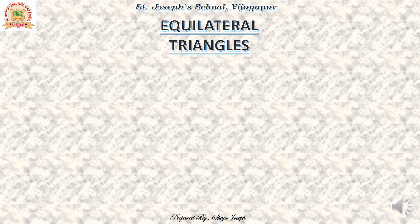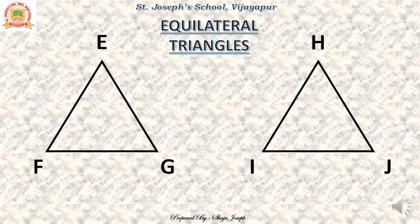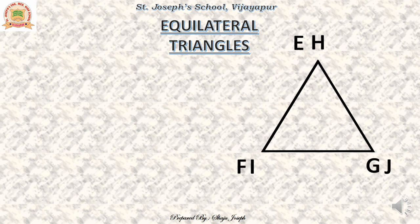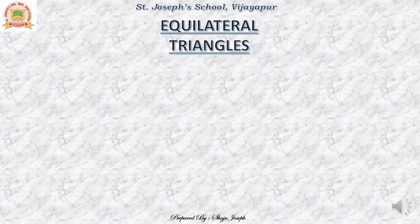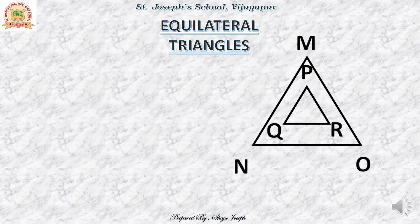Let us discuss with an example of equilateral triangles. I take triangle EFG and triangle HIJ, both equilateral. I try to place one on the other — they fit perfectly. They are similar in shape as well as congruent. Now MNO is a triangle and PQR is another smaller triangle. When we try to place one on another, they are not fitting — these are not congruent. But their shapes are the same, so they are similar. Here they are similar but not congruent, whereas in the previous case they were congruent as well as similar.